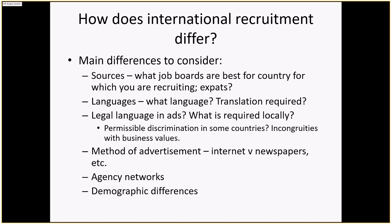Method of advertisement — internet versus newspapers. You have to understand where you're marketing. If you're recruiting in an area where internet is still not widely available, you'll have to figure out how else to reach those people, whether through newspapers, job fairs, or other means. Agency networks — look at agencies that have local expertise, either focused on expats or agencies on the ground locally. I'm probably not going to hire an agent in Denver to recruit 100 people in Ghana.